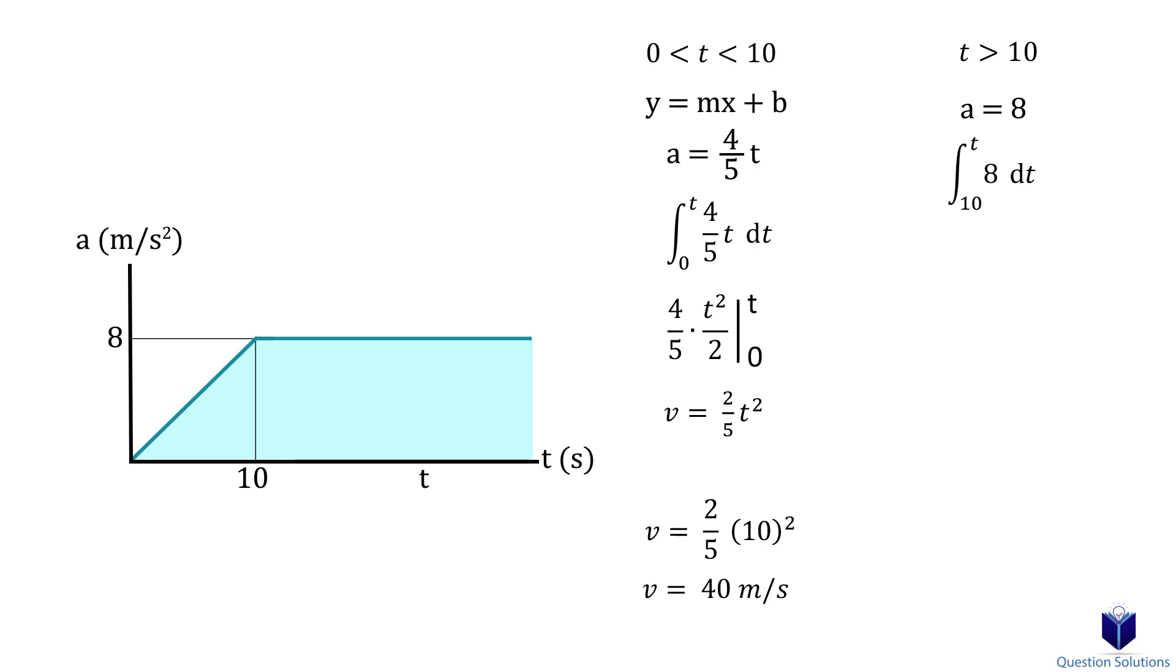We can integrate the second segment as follows. When we integrate, we get the following equation. Remember the initial velocity we found, we have to use that now because our initial condition starts at 10 seconds, so we get the following.